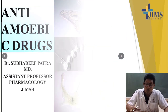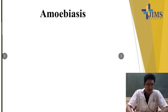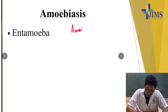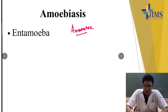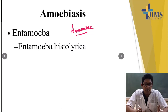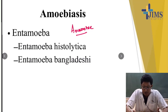Before that, we have to understand what is amoebiasis. Amoebiasis is an infection caused by pathogenic anaerobic protozoa, Entamoeba. Four species of Entamoeba have been isolated from stool samples of humans. These are Entamoeba histolytica — the name suggests 'histolytica' means amoeba that causes tissue lysis — and Entamoeba bangladeshi, a novel species recently discovered in Bangladesh.